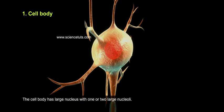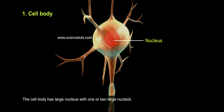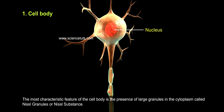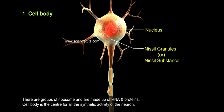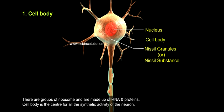The cell body has a large nucleus with one or two large nucleoli. The most characteristic feature of the cell body is the presence of large granules in the cytoplasm called Nissl granules, or Nissl substance. These are groups of ribosomes made up of RNA and proteins. The cell body is the center for all synthetic activity of the neuron.